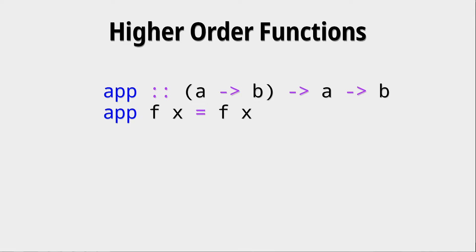Here for example we can see that this app function takes an argument f and that has to be a function because it is applied to x in its definition. We see this in the type signature with the parentheses. The first argument is a function that takes an a and gives back a b.